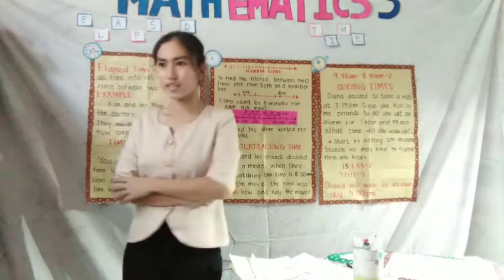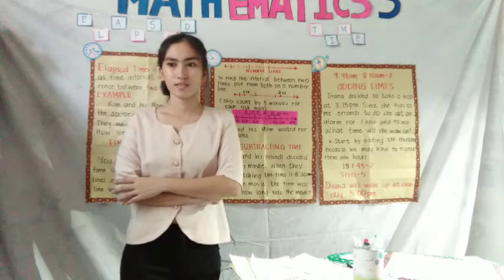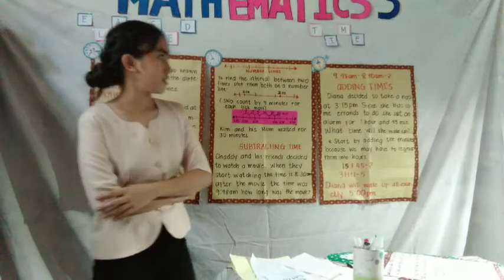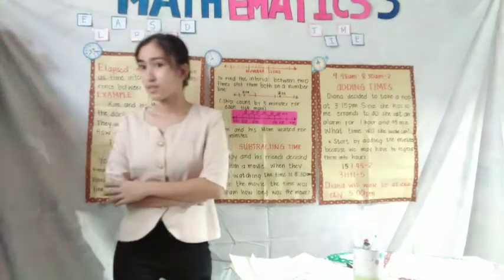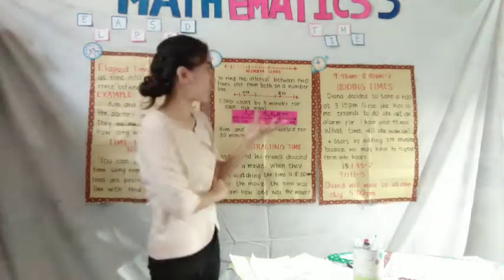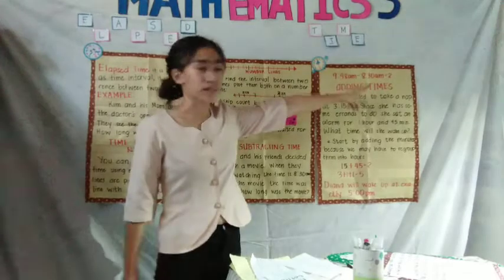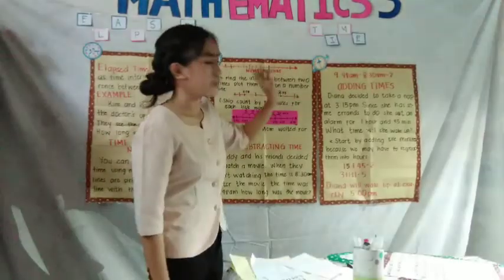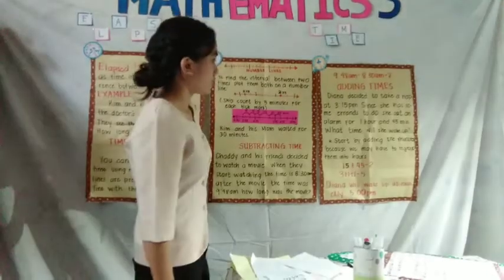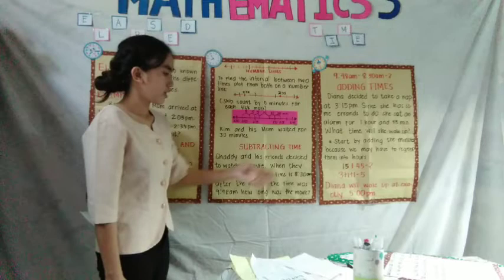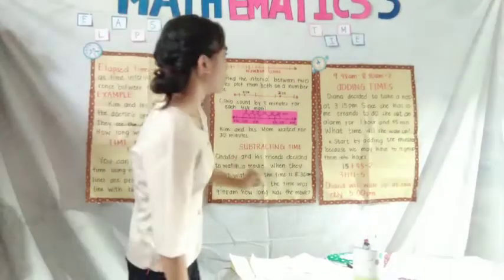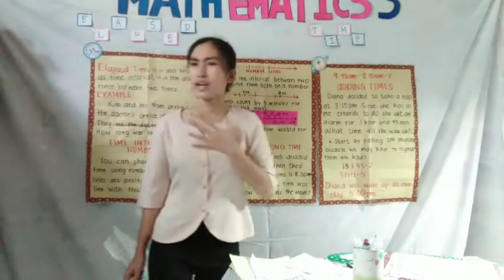So 9:48 AM minus 8:30 AM is equals to, can someone answer that for me? Any volunteer? Genie? You got 1:18. 1:18, which is correct, but we have to format it in time format. So 1:18 meaning 1 hour and 18 minutes, correct. So the movie has a length of 1 hour and 18 minutes. So am I understood, class?